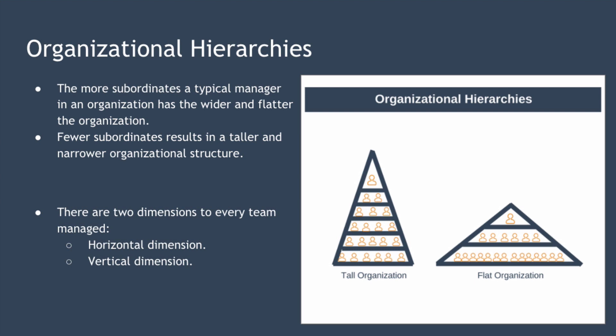Note that there are two dimensions to every team managed. First, we have the horizontal dimension, and that refers to the number of employees a manager has directly reporting to them. Secondly, we have the vertical dimension, and that refers to the number of employees that are indirectly managed by that manager — so that's the depth of the organizational chart underneath that manager, often referred to as a manager's depth of control.